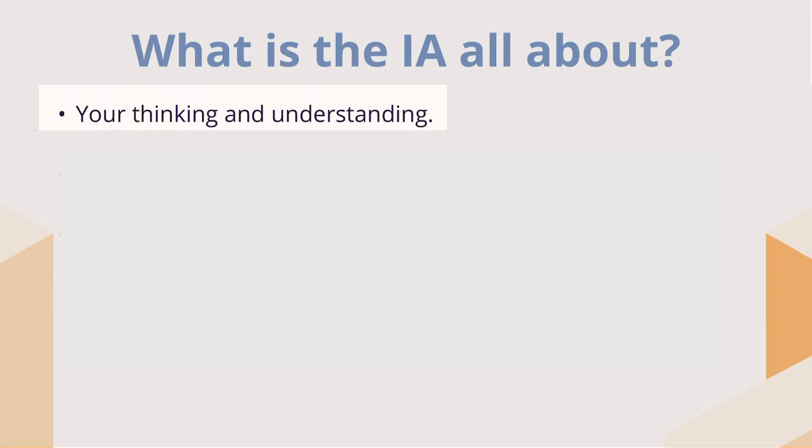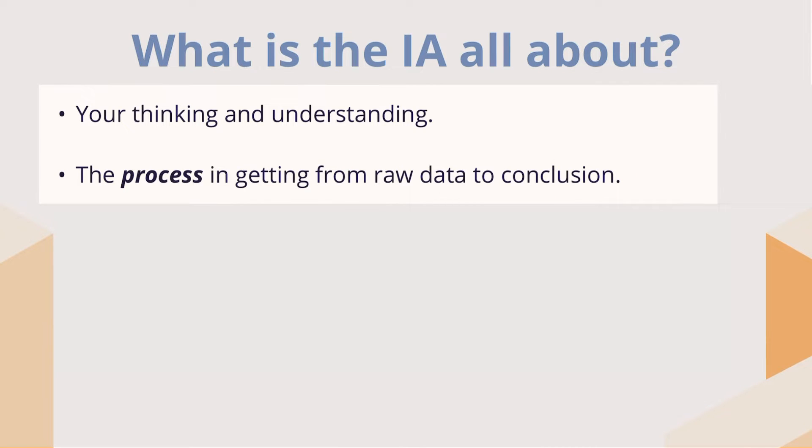Before we get into how you're going to apply probability and what aspects you're going to bring in, let's think about what the IA is actually all about. The IA is about your thinking and your understanding of the topic that you're discussing. It's not just about doing a bunch of calculations — it's not just about tree diagrams or tables or whatever you're going to use. What it's really about is how you think about the mathematics, how you think about probability, and how you're applying it.